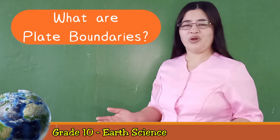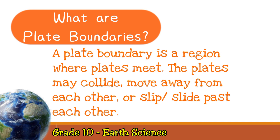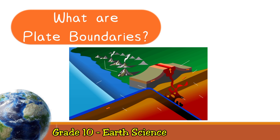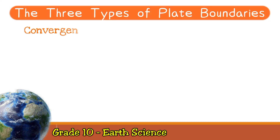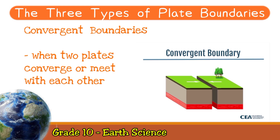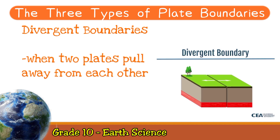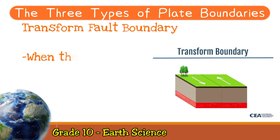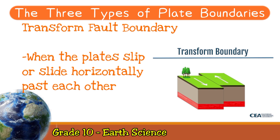Do you remember what plate boundaries are? A plate boundary is a region where plates meet. In this boundary, the plates may collide, move away from each other, or slide past each other. There are three kinds of plate boundaries. When two plates converge or meet with each other, a convergent boundary is present. When the two plates pull away from each other, a divergent boundary is present. Finally, when the plates slip or slide horizontally past each other, their boundary is called a transform fault boundary.